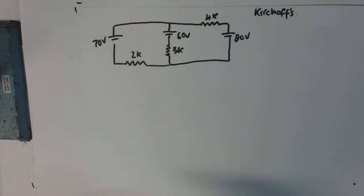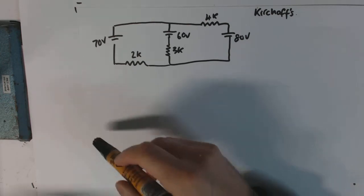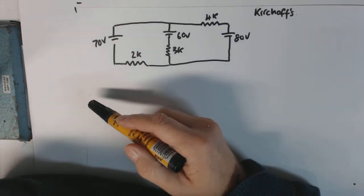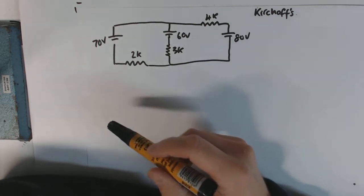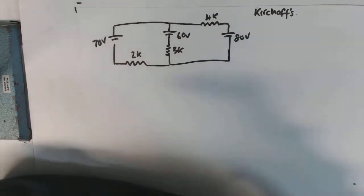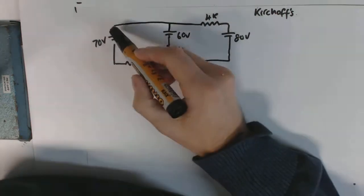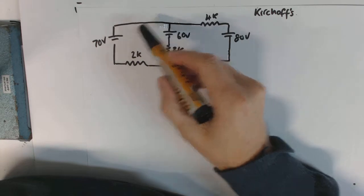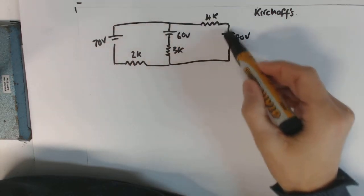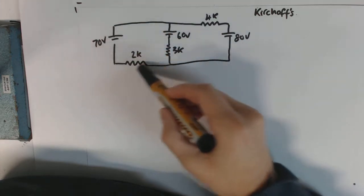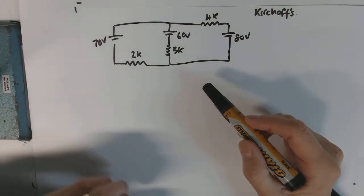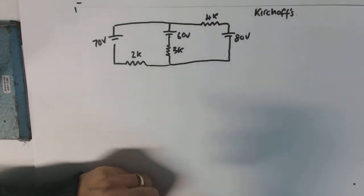So the way I look at these Kirchhoff circuits is you've got to do a loop and you decide the direction of the loop. I always start from one of the EMFs, so the 70, 60, or the 80 volts. I always start from the positive, go out from the positive, and my loop will be like that. So with this one I could go there, there, there, but I always start from the positive and that makes that EMF a positive in my equation.